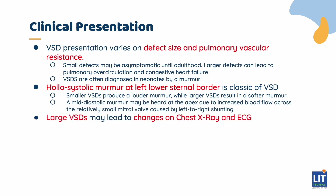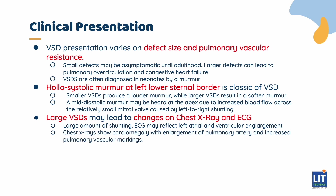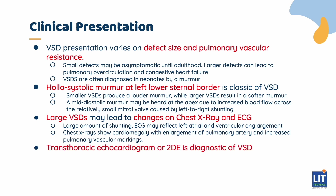Large VSDs may lead to changes on chest x-rays and ECGs. With a large amount of shunting, the ECG may reflect left atrial and ventricular enlargement and hypertrophy. If severe, right ventricular hypertrophy may also occur. Chest x-rays show cardiomegaly with enlargement of the pulmonary artery and increased pulmonary vascular markings. 2D echo with Doppler is diagnostic of VSD.